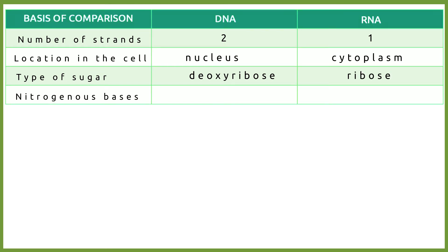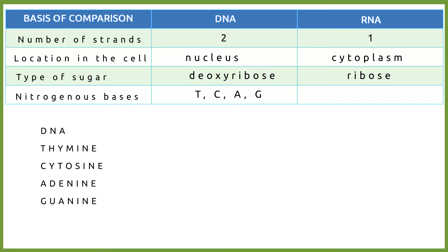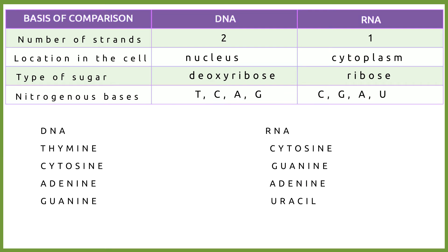For nitrogenous bases, for DNA the nitrogenous bases are thymine, cytosine, adenine, and guanine. Thymine and cytosine are referred to as pyrimidines, and adenine and guanine are called purines. For RNA, the nitrogenous bases are cytosine, guanine, adenine, and uracil. So the thymine in DNA is replaced by uracil in RNA.